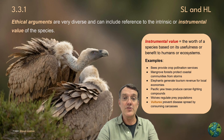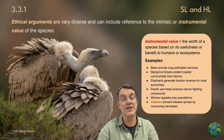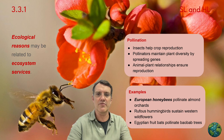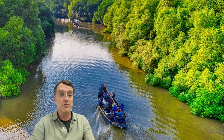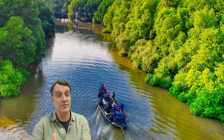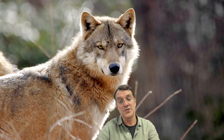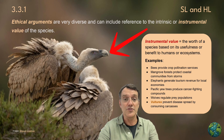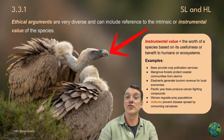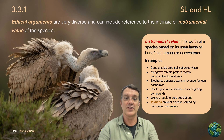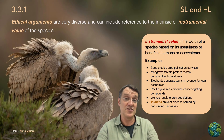By contrast, instrumental value refers to the worth of a species based on its usefulness or benefit to humans or ecosystems. This includes bees providing crop pollination services, mangrove forests protecting coastal communities from storms, elephants generating tourism revenue, Pacific yew trees producing cancer-fighting compounds, wolves regulating prey populations, and vultures preventing disease spread by consuming carcasses. These values represent the practical benefits that species provide.